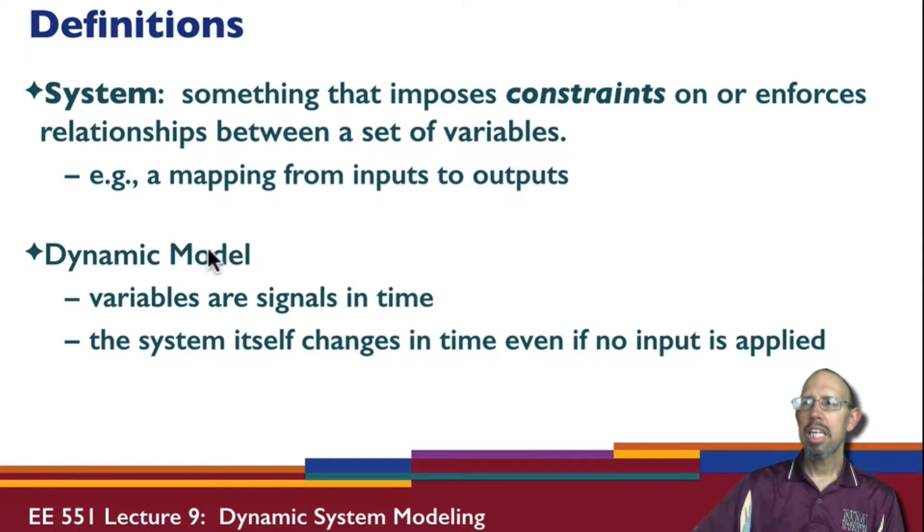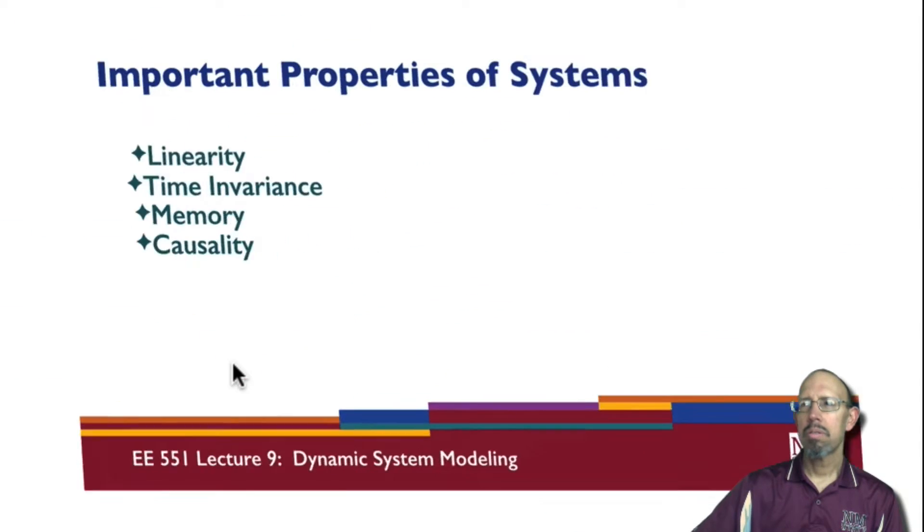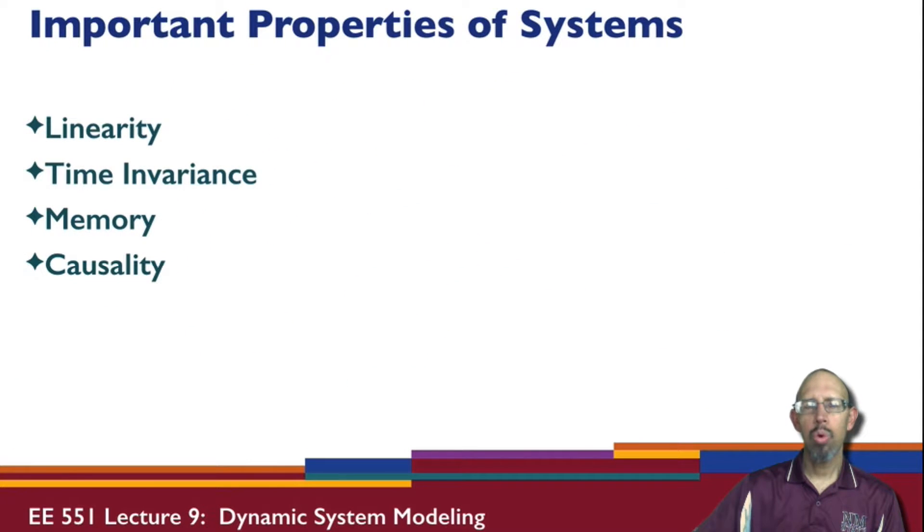A dynamic model is a model where the variables are signals in time and where the system itself changes in time. Even if no input is applied, the system changes properties within the system or variables within the system change with respect to time.